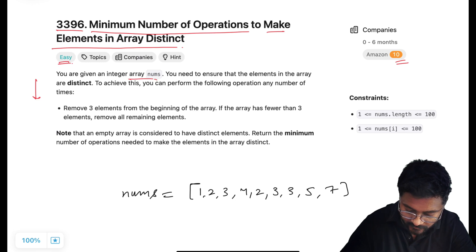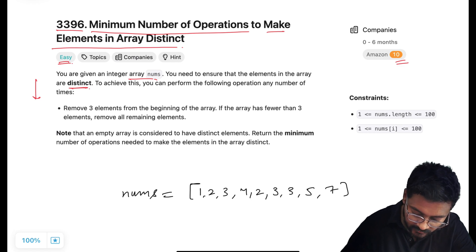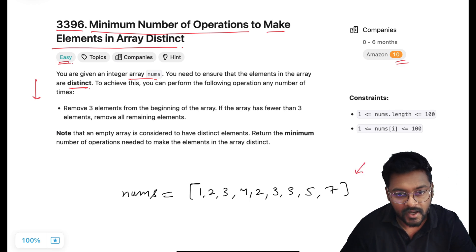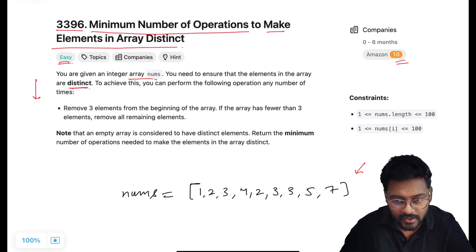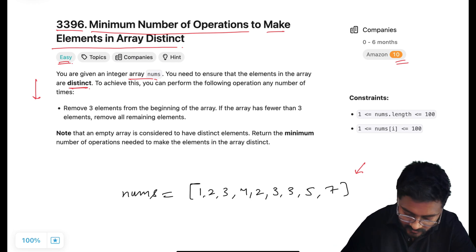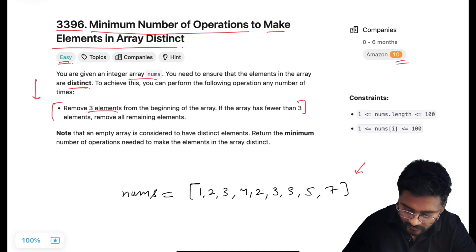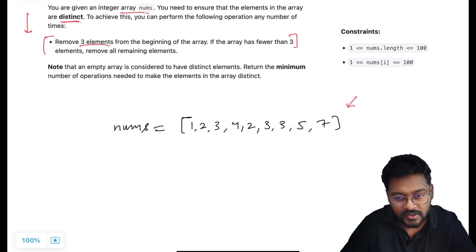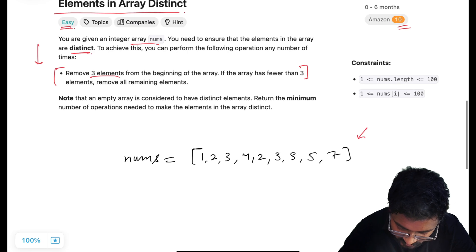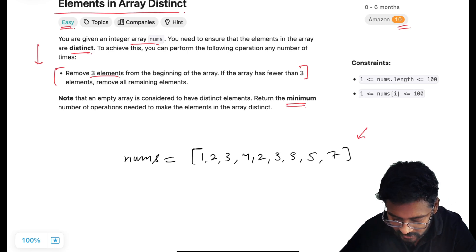We are given an integer array nums and we need to ensure that the elements in the array are distinct or unique. To achieve this, we can perform the following operation any number of times: remove three elements from the beginning of the array, and if there are fewer than three elements, remove all the remaining elements. We just have to return the minimum number of operations needed to make the array distinct.